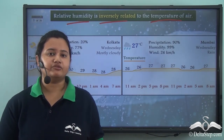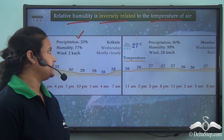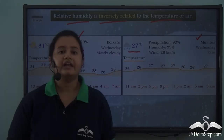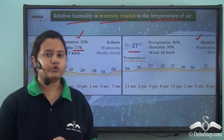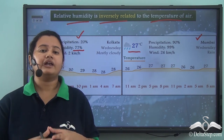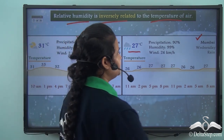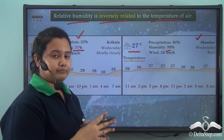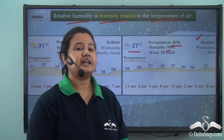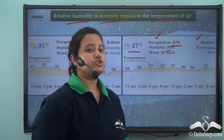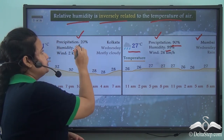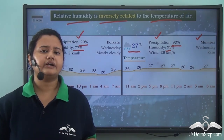Now we understand why Kolkata, being warmer, has less relative humidity than Mumbai, which is cooler. The type of humidity used in weather forecasting is relative humidity. Relative humidity indicates the likelihood of precipitation or rainfall. If relative humidity is more, the chances of rainfall are more — as in Mumbai with 99% relative humidity — while Kolkata at 77% has a lower likelihood of rainfall.